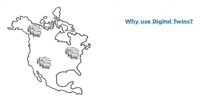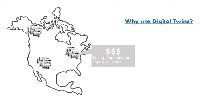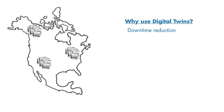Before we get into how you can create digital twins using different types of models, let's talk about what benefits you get from digital twins. We said there are multiple pumps running on every well site. These pumps contain parts such as valves, seals, and plungers that are very expensive. Therefore, we want to prevent failures by predicting them in advance, which in turn will help us reduce downtime. We may also want to identify faults that develop in this system and get insights into what parts may need repair or replacement.